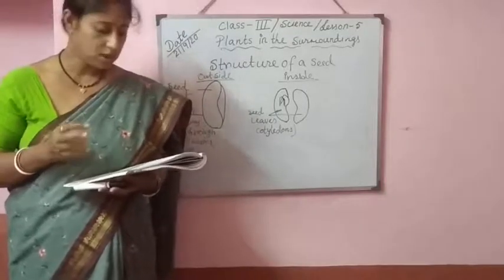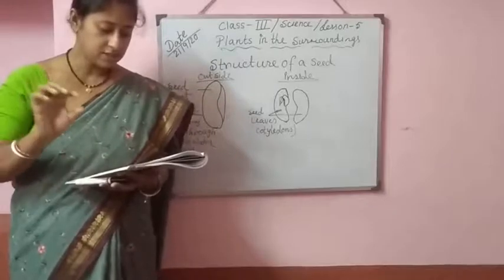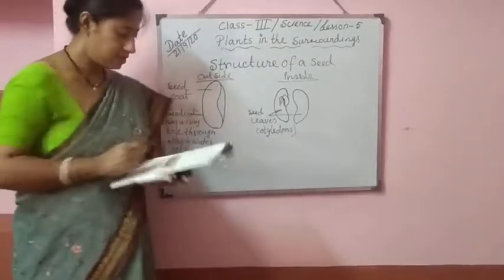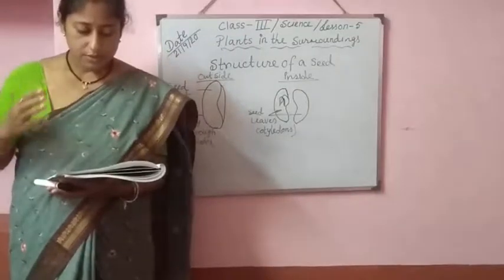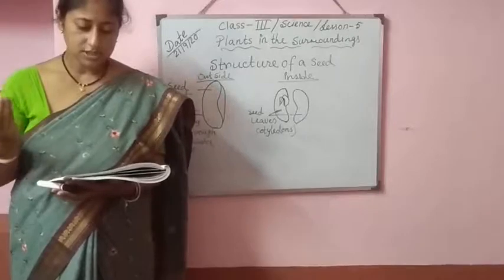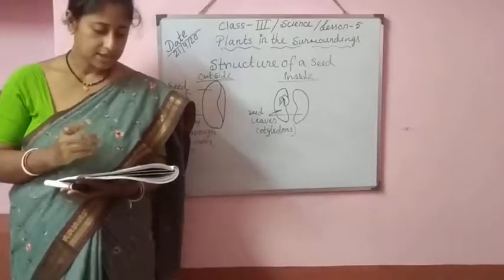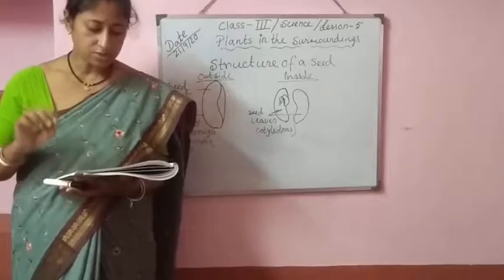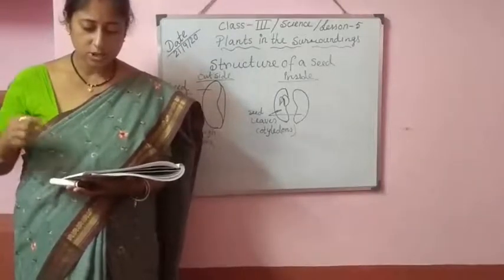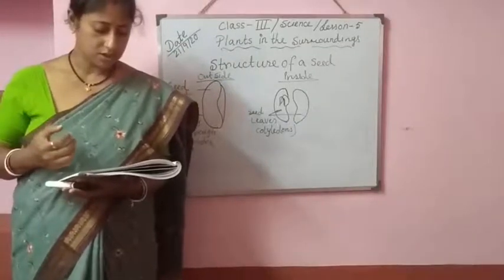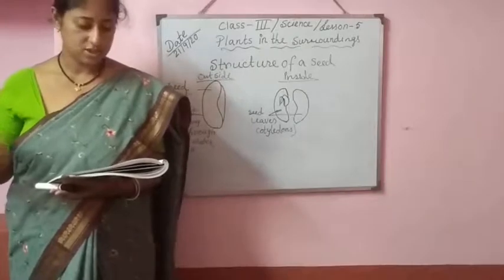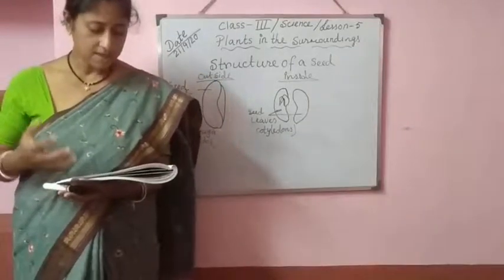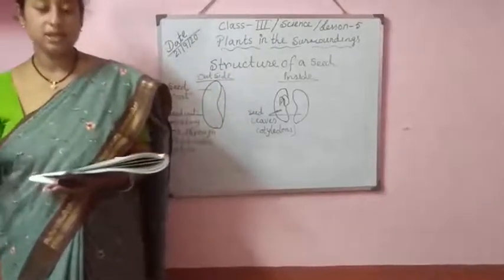First, the seed takes in water from the soil through a tiny hole present on the seed coat. This makes the seed swell, and the seed coat splits and breaks. Next, a tiny root starts to grow deep downwards in the soil while a shoot grows upwards. Then soon a seedling with tiny leaves comes out of the ground. Finally, the seedling grows into a new plant.